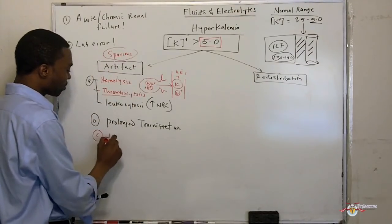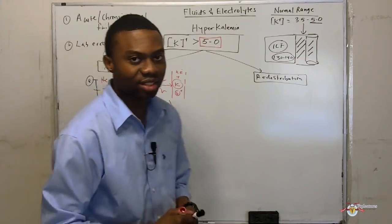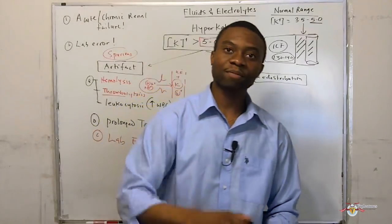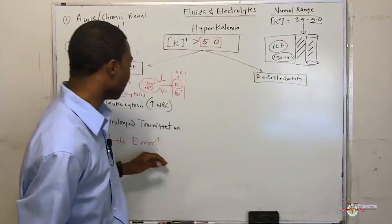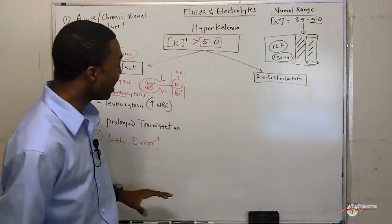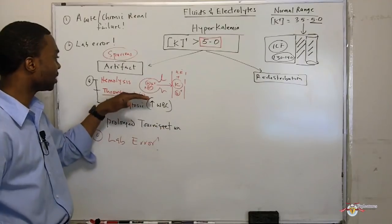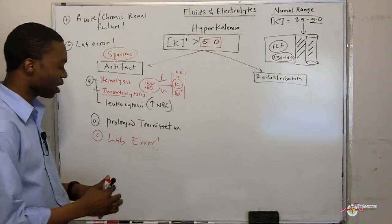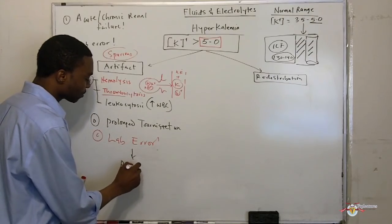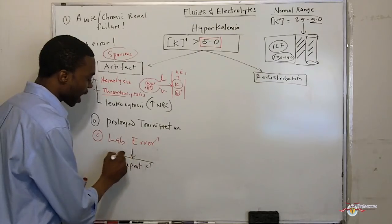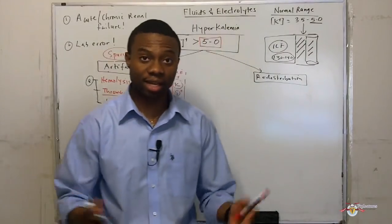If you get back a lab error or it was due to hemolysis or prolonged tourniquet use, all you have to do is repeat the potassium level. Just redraw the blood and recheck it, and the potassium will be fine.